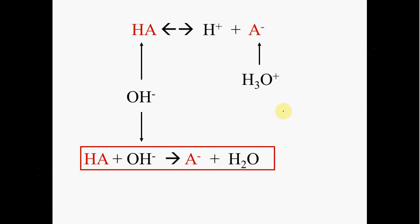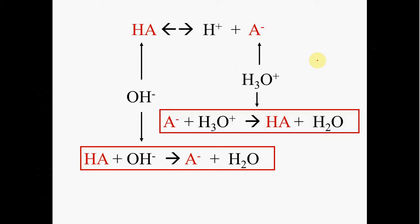When you add the hydronium ion, it's going to react with the strongest base in this reaction, which would be the conjugate base. And that chemistry is going to be A negative plus the hydronium ion reforms some of the HA. So basically the hydroxide ion will react with the acid to reform the conjugate base, and the hydronium ion will react with the conjugate base to reform the weak acid.